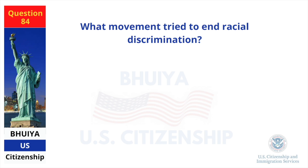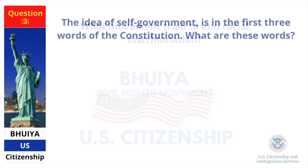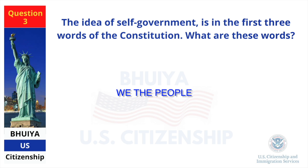What movement tried to end racial discrimination? Civil rights movement. The idea of self-government is in the first three words of the Constitution. What are these words? We the people.